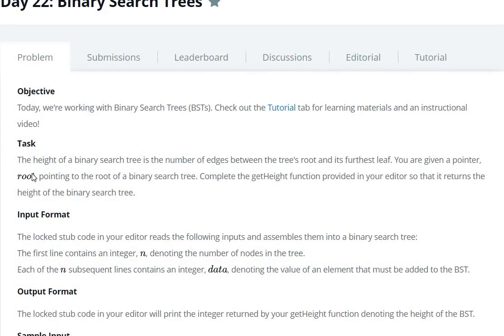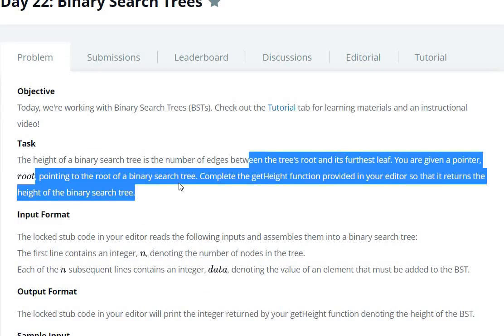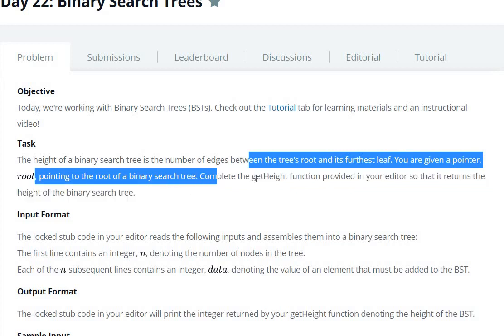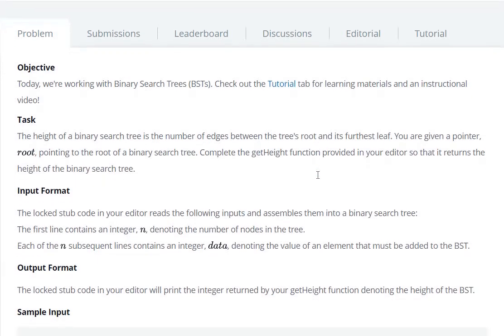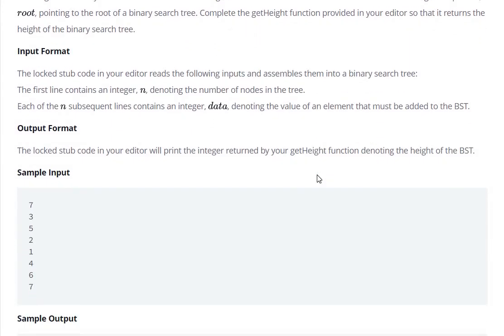We have a task: the height of a binary search tree is the number of edges between the tree's root and its furthest leaf. You are given a pointer root pointing to the root of the binary search tree. Complete the getHeight function provided in your editor so that it returns the height of the binary search tree.